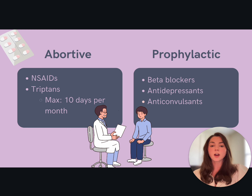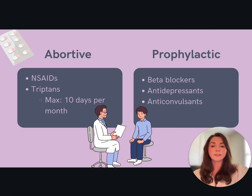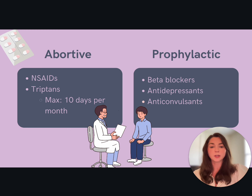There are also first-line prophylaxis treatments for migraines, such as beta blockers like propranolol, tricyclic antidepressants like amitriptyline, selective norepinephrine reuptake inhibitors (SNRIs) like venlafaxine or Effexor, and anticonvulsants like topiramate or Topamax. Patients should be educated on avoidance of triggers, regular exercise, sleep, and diet.